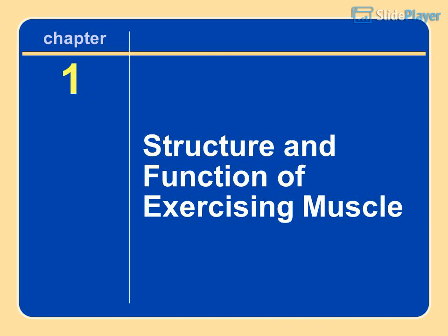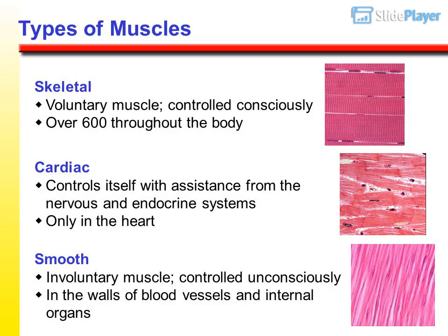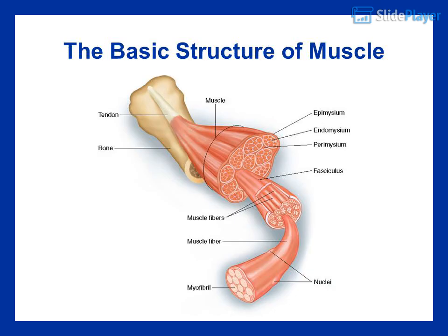Chapter 1: Structure and Function of Exercising Muscle. Types of muscles: skeletal — a voluntary muscle controlled consciously, found in over 600 locations throughout the body; cardiac — controls itself with assistance from the nervous and endocrine systems, found only in the heart; smooth — an involuntary muscle controlled unconsciously, found in the walls of blood vessels and internal organs.